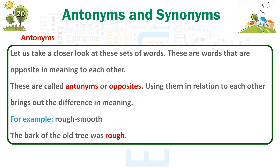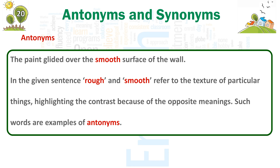Using them in relation to each other brings out the difference in meaning. For example, rough and smooth. The bark of the old tree was rough. The paint glided over the smooth surface of the wall. In the given sentences, rough and smooth refer to the texture of particular things, highlighting the contrast because of their opposite meanings.